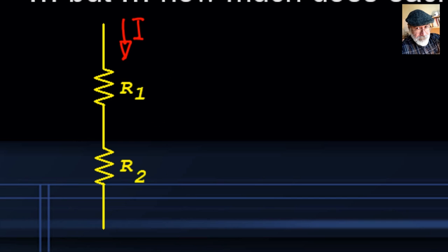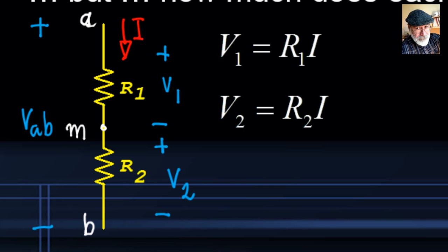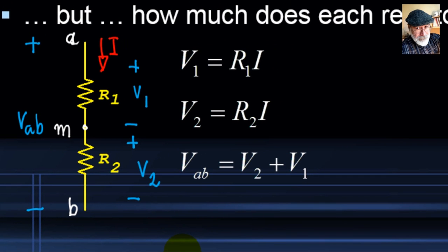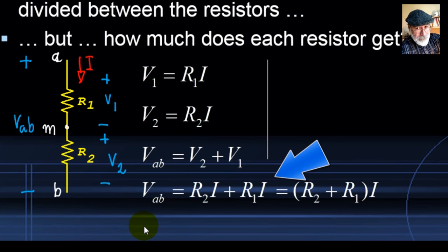The current I flowing through the branch produces a voltage drop V1 = R1·I across R1, by Ohm's Law. The same current flows through R2, producing V2 = R2·I. The total voltage being split between R1 and R2 is V1 + V2. Substituting gives Vib = (R1 + R2)·I — total resistance times the current in the branch.